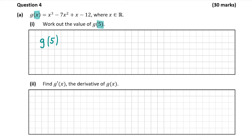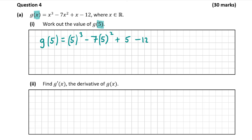So that's going to look like this. We get 5 cubed minus 7 times 5 squared plus 5 minus 12. Be careful here — for the squared on the 5, it's just 5 squared, so don't make the mistake of squaring the 7 as well. That's a common mistake. Starting with 5 cubed — you can try this in your calculator — you should get 125.